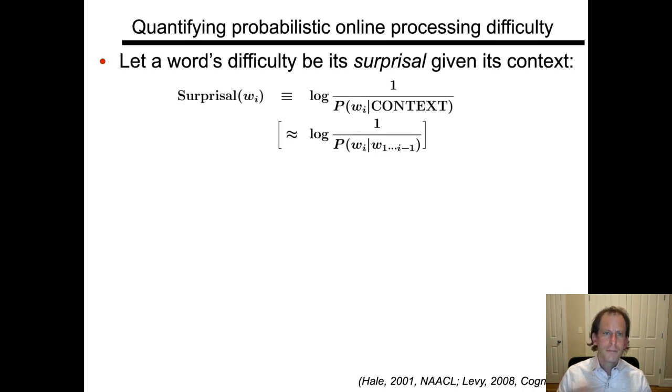There's a simple proposal originally due to Hale in 2001 that I've worked on a lot as well, which says that a basic information theoretic quantity is actually the best quantifier of that. In particular, that's the word surprisal. Recall from our introductory information theory that the surprisal of a word is simply the log of its inverse probability in the context in which it appears. For example, for isolated sentence processing, we might use just the preceding words in the sentence as a representation of the context.